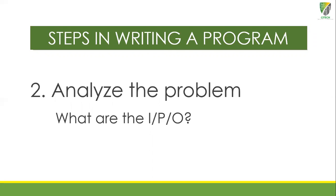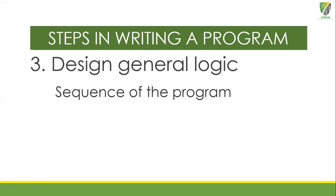Step 2: Analyze the problem — what are the I, P, and O? IPO stands for Input, Process, and Output. Step 3: Design the general logic — the sequence of the program. Once we've identified the I, P, and O, we need to know where to place them into the program.